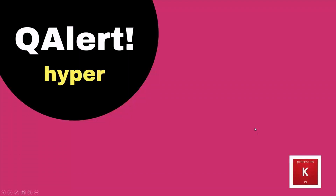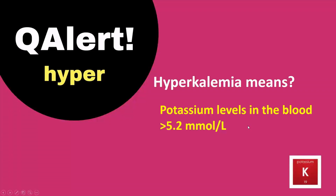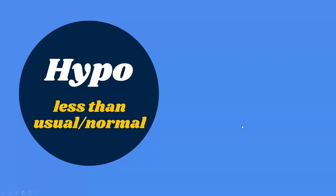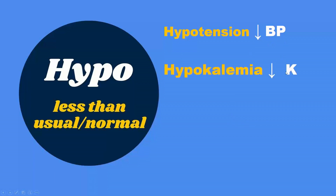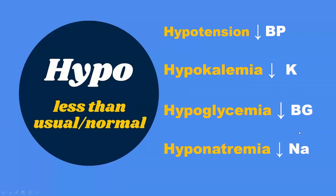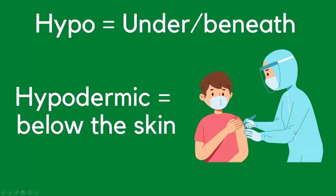Question alert for hyper: hyperkalemia means potassium levels in the blood more than 5.2 millimoles per liter. Next, prefix hypo means less than usual or normal. Examples: hypotension is low blood pressure, hypokalemia is low potassium, hypoglycemia is low blood glucose, hyponatremia is low sodium. Hypo also refers to under or beneath, such as hypodermic — below the skin.